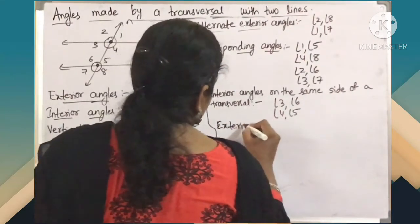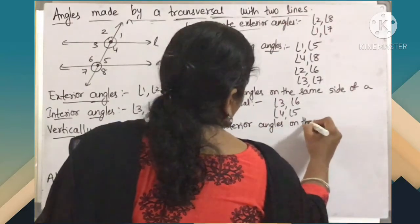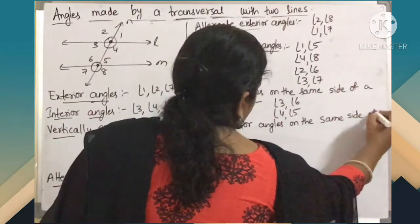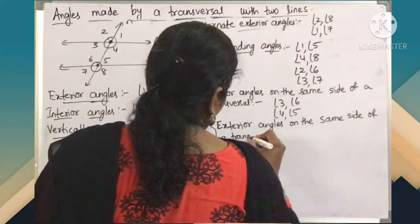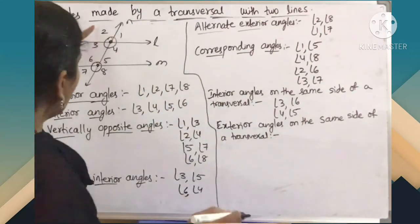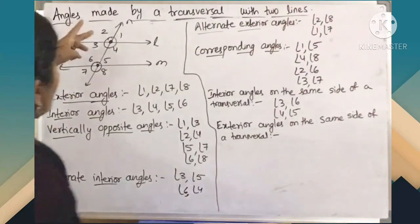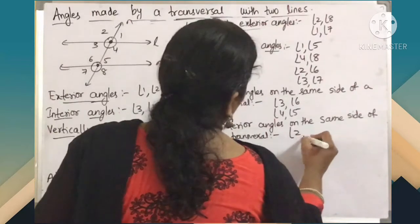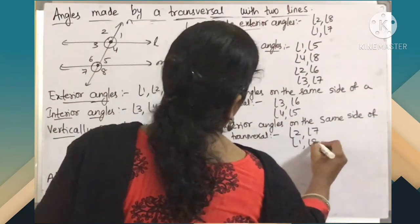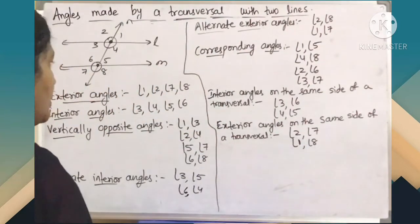Now we will take exterior angles on the same side of a transversal. We should consider only exterior angles: 1, 2, 7, and 8. They should be on the same side of the transversal. So one pair is angle 2 and angle 7, and another pair is angle 1 and angle 8. So we get 2 pairs of exterior angles on the same side of the transversal.